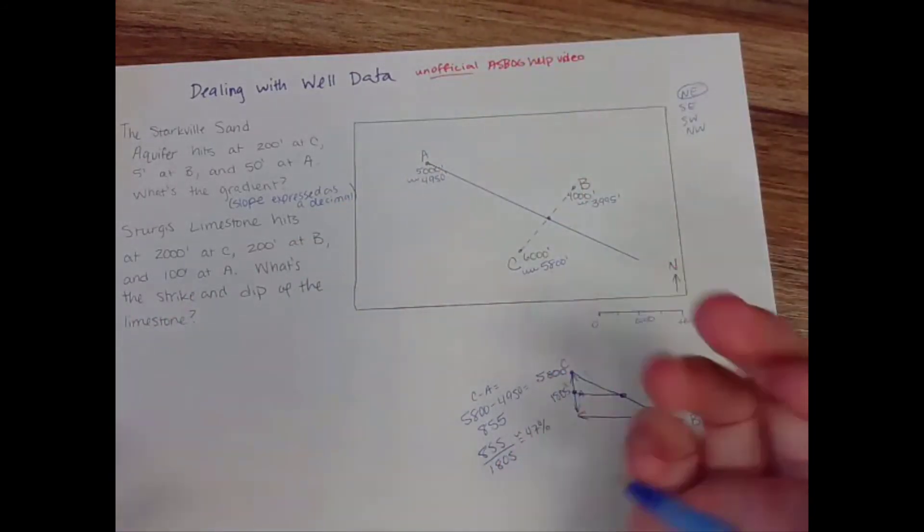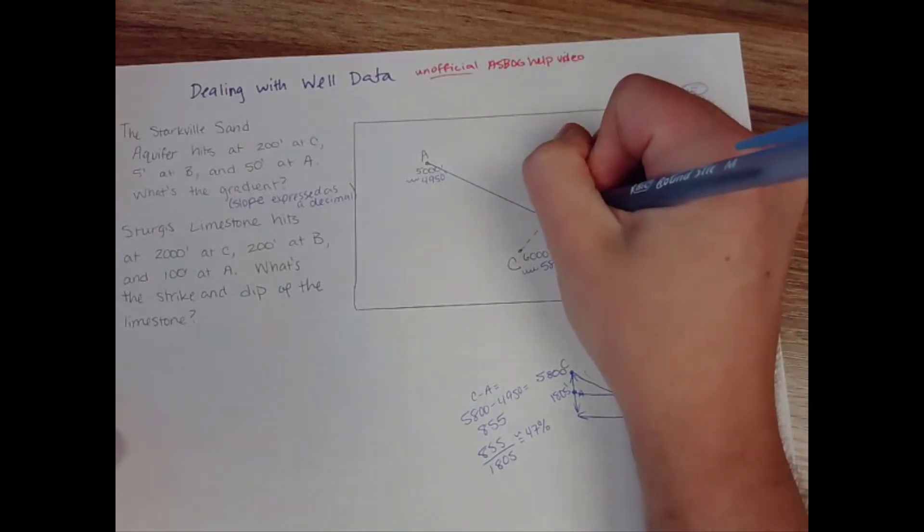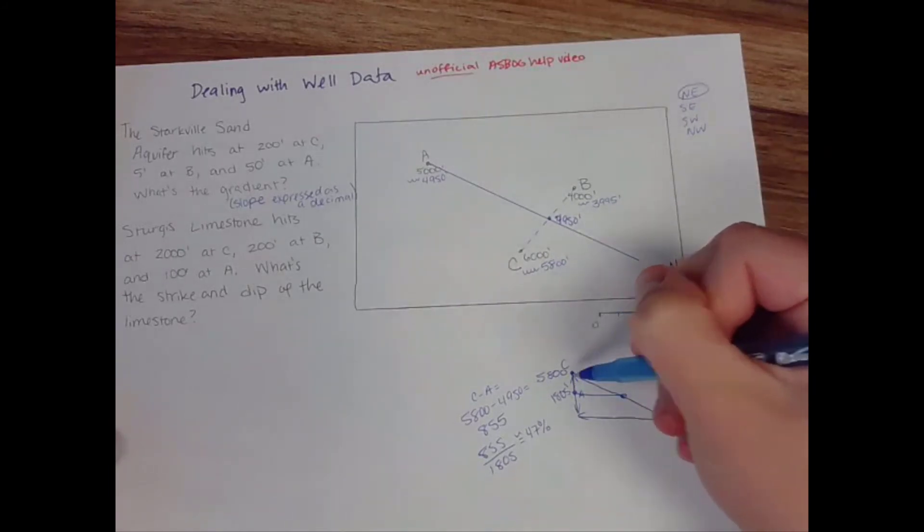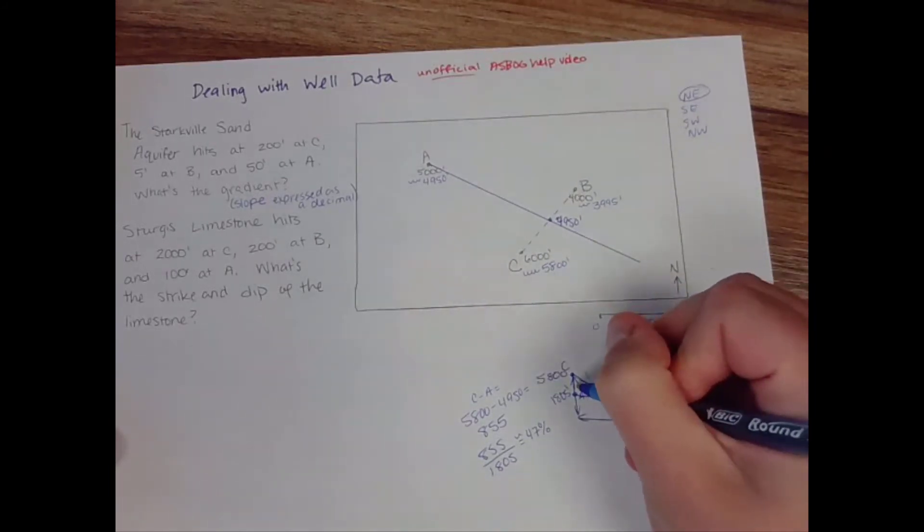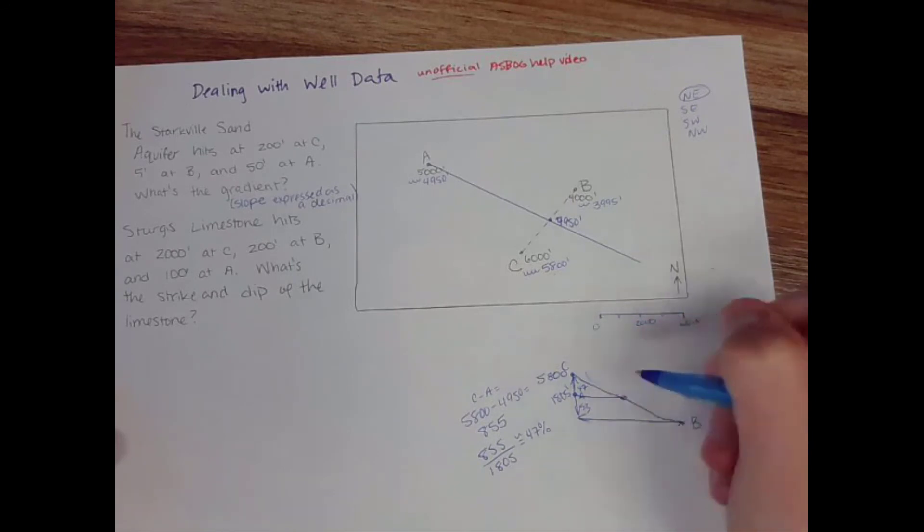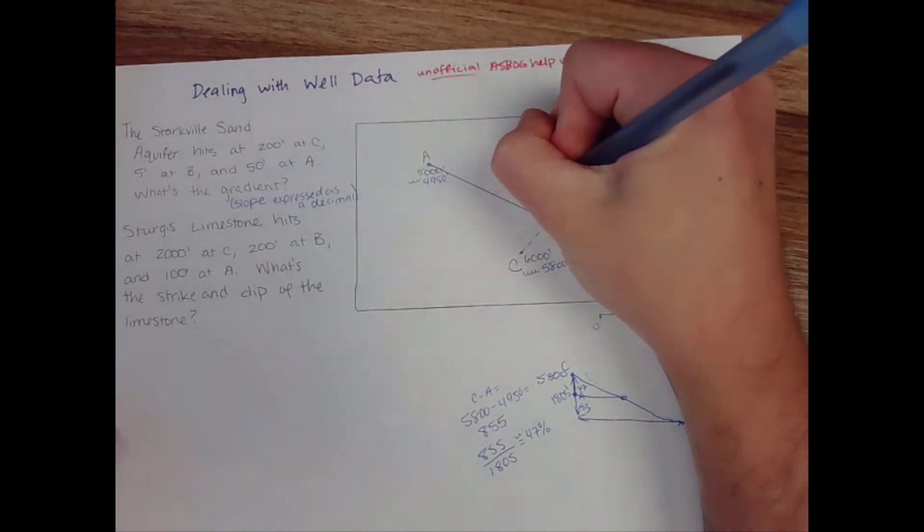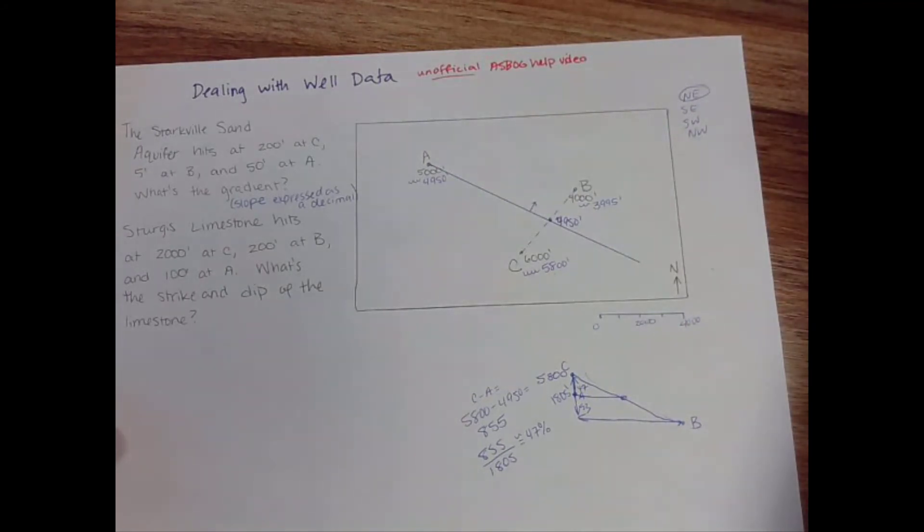In a way this is a line of strike because at this point my elevation is also 4,950. I'm right in between those two points maybe a little bit closer to C because it's 47 percent versus 53 percent but I'm still about halfway too. All right that's my strike so 90 degrees to strike means that is my dip direction or my gradient direction but now I need to figure out the amount.